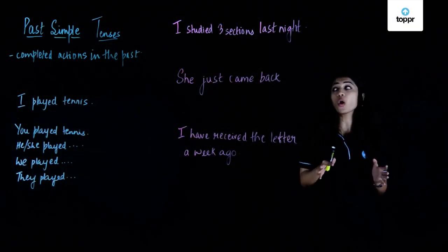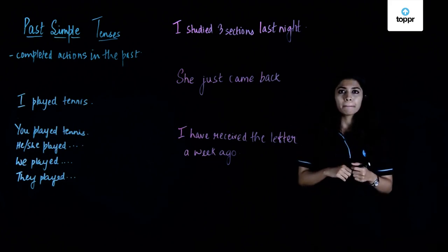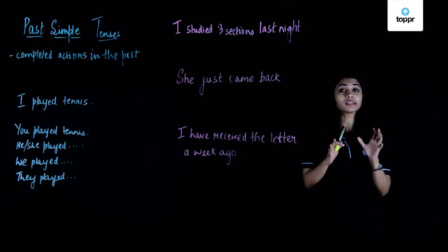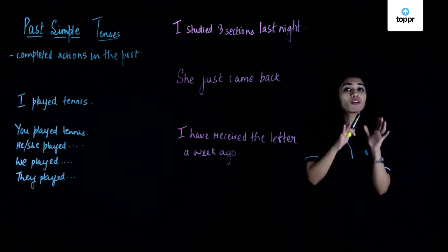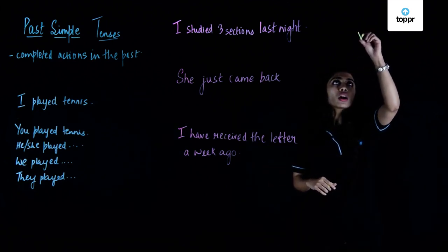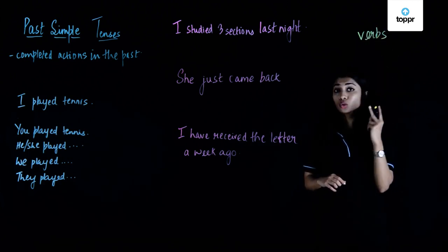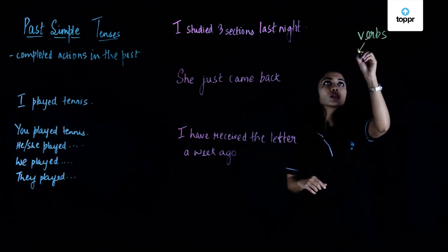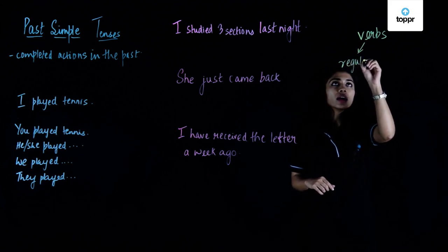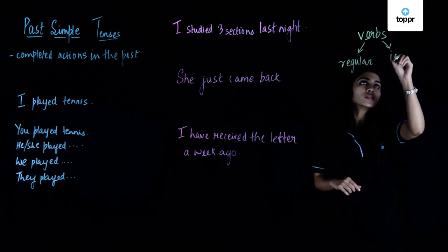Next, let's move on to the past simple tense. But before that, I want you to understand this aspect of grammar. When we talk about verbs, there are two types: regular and irregular.